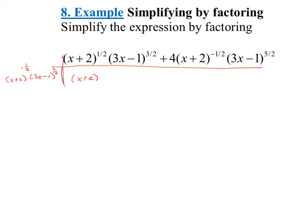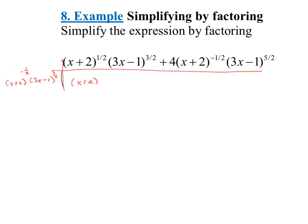For 3x minus 1 to the three halves divided by 3x minus 1 to the three halves, that's simply 1, so I don't include that term. Then the 4 has no matching constant, so it remains. The x plus 2 to the negative one half divided by itself is 1. For 3x minus 1 to the five halves divided by 3x minus 1 to the three halves: five halves minus three halves is 1, leaving just 3x minus 1. So far we have x plus 2 to the negative one half times 3x minus 1 to the three halves, times the quantity x plus 2 plus 4 times 3x minus 1.